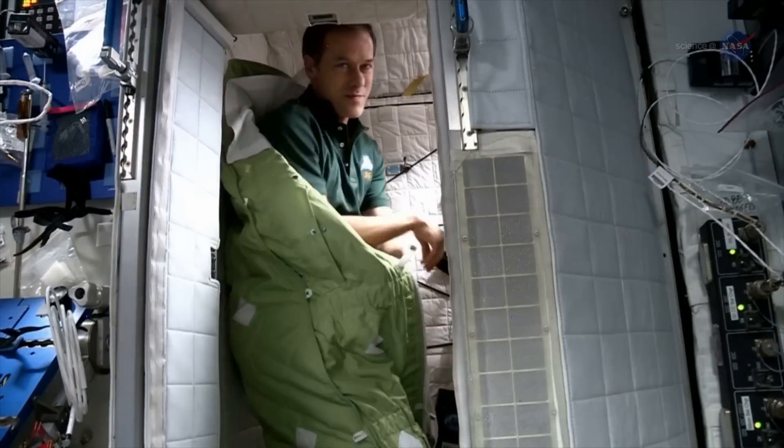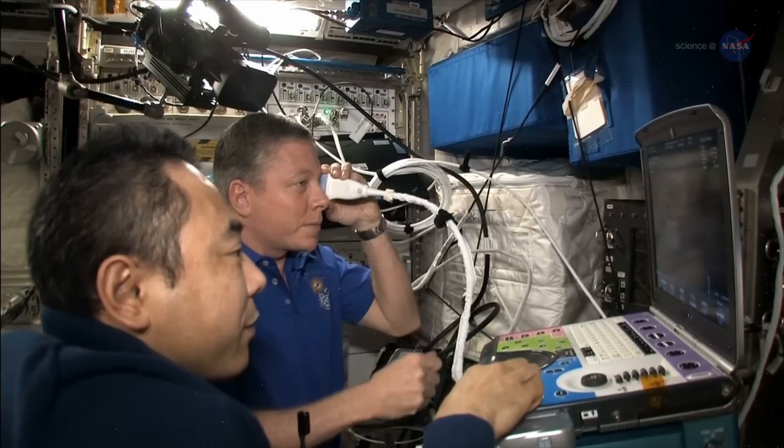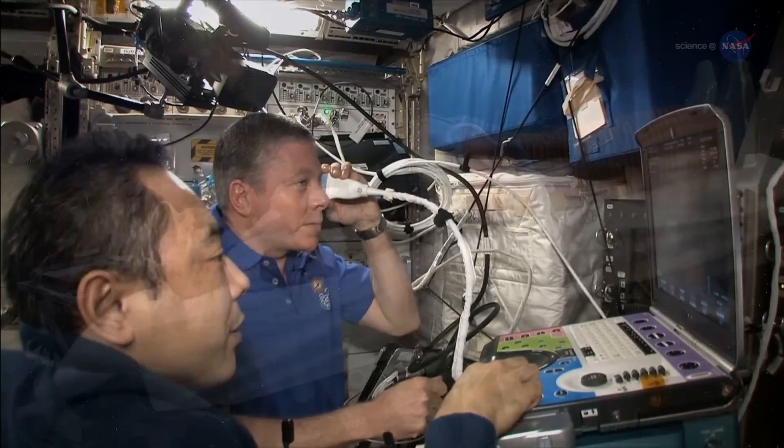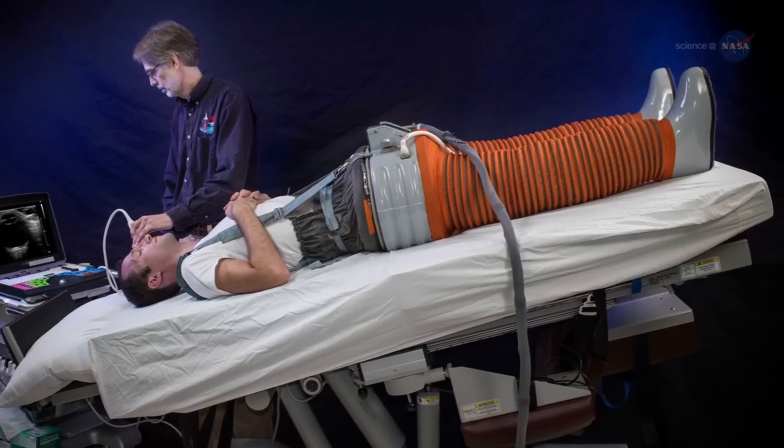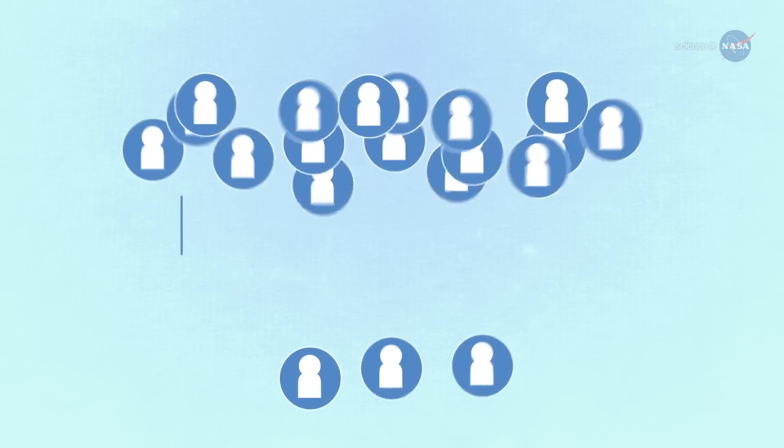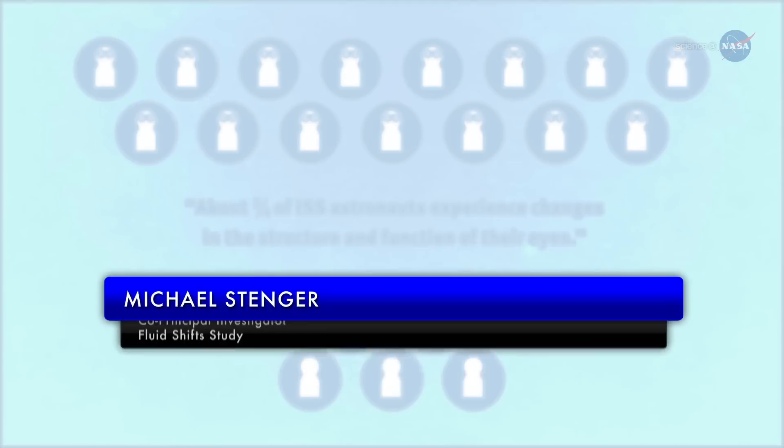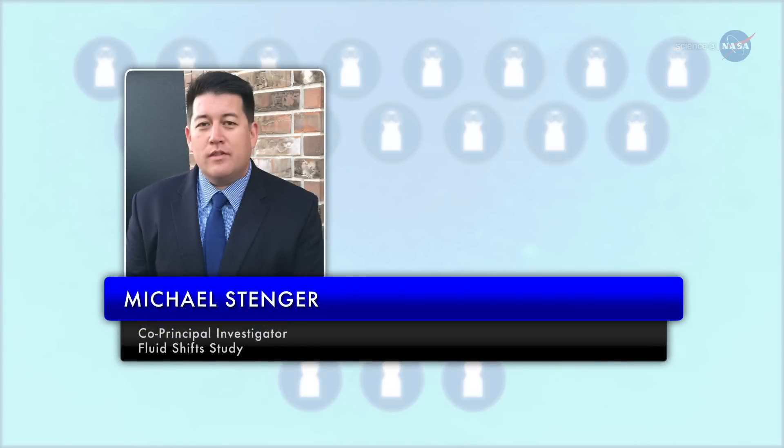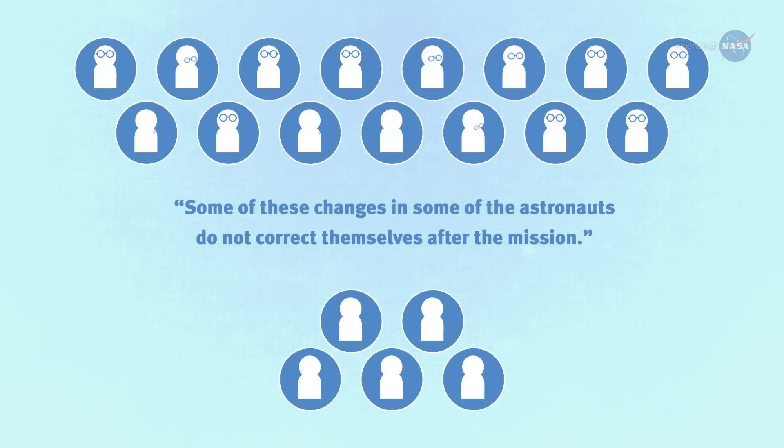Among the challenges astronauts face during their stints on the International Space Station, farsightedness is fairly common, hence the horn rims. But it may be those funny stockings can reduce the need for them. About three-quarters of ISS astronauts experience changes in the structure and function of their eyes during and or after their mission, says Michael Stenger of Wiley Science Technology and Engineering Group. And some of these changes in some of the astronauts do not correct themselves after the mission.